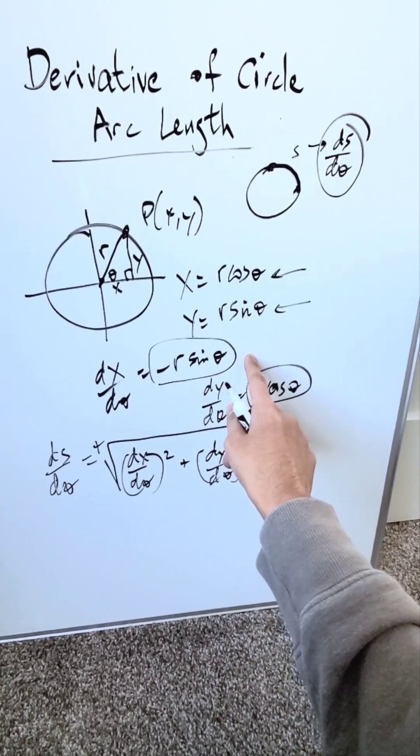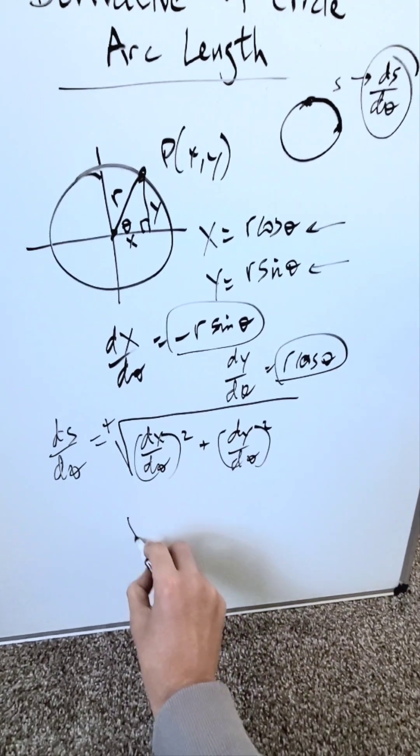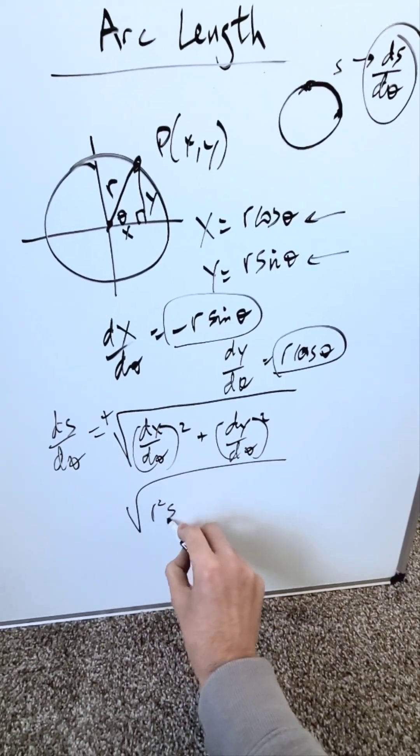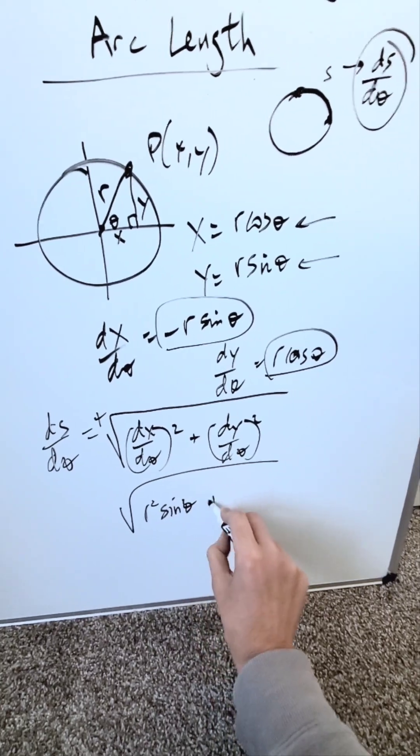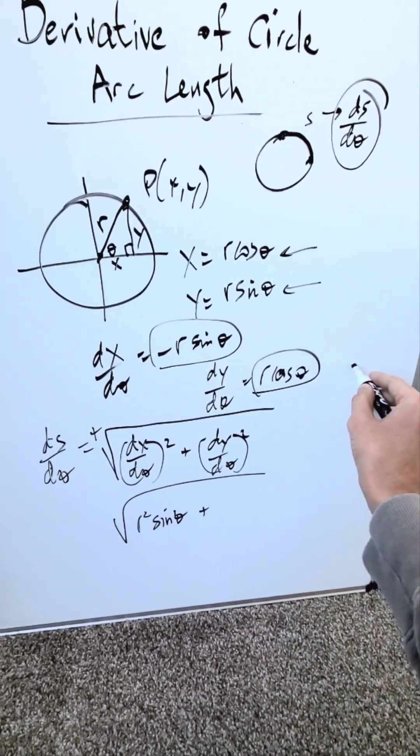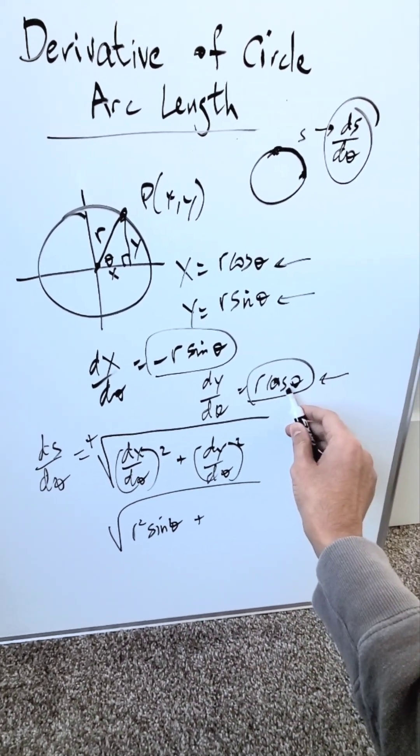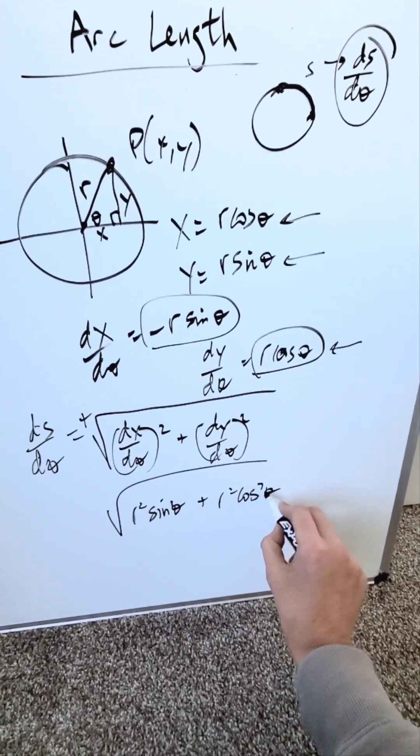I have dx/dθ, which is this. The square of this is r² sin² θ. Then I have dy/dθ. The square of r cos θ is r² cos² θ.